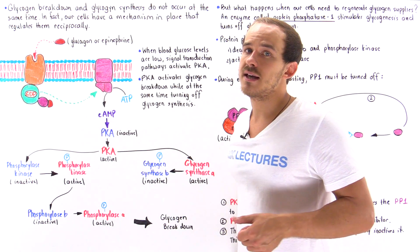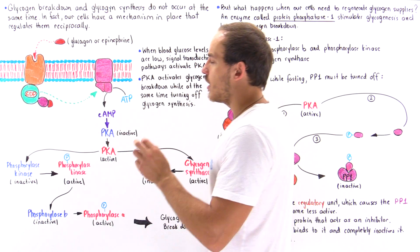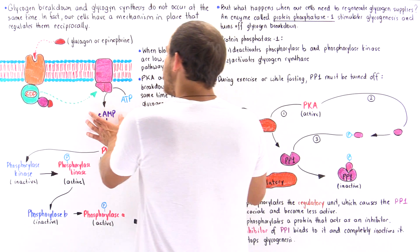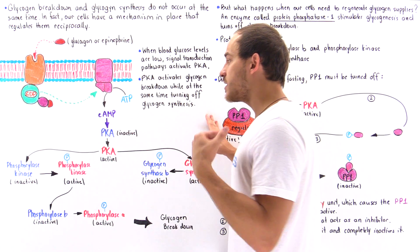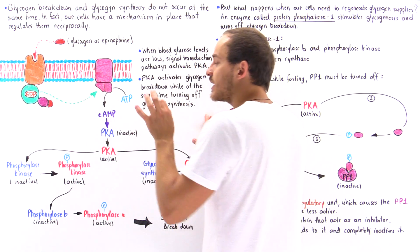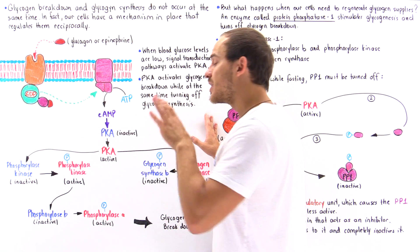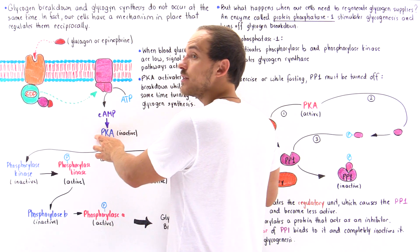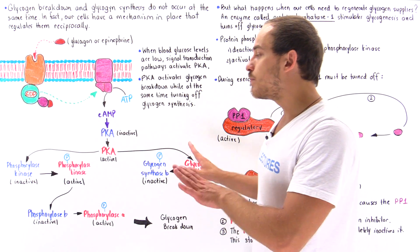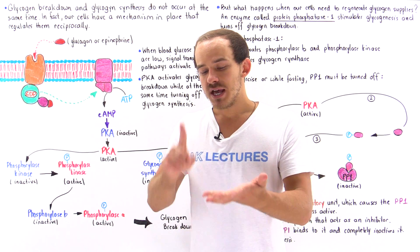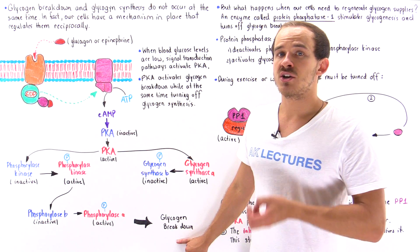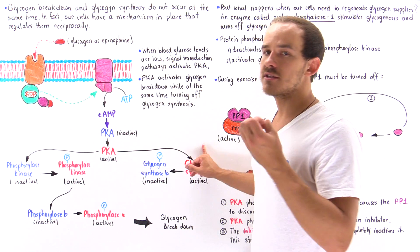Once bound, adenylate cyclase is stimulated to create secondary messenger molecules, transforming ATP into cyclic AMP. The cyclic AMP acts as a secondary messenger, binding to regulatory sites of protein kinase A (PKA) and activating it by allowing the catalytic subunits to dissociate from the regulatory subunit. Protein kinase A then does two important things: it creates a pathway that activates glycogen breakdown and a pathway that deactivates glycogen synthesis.